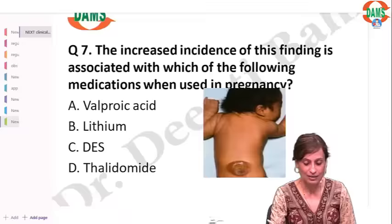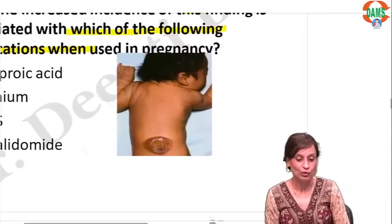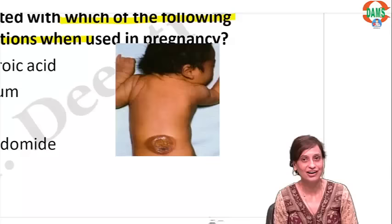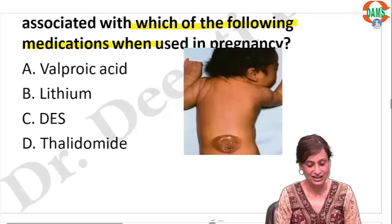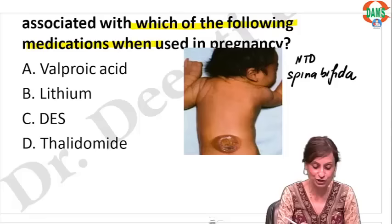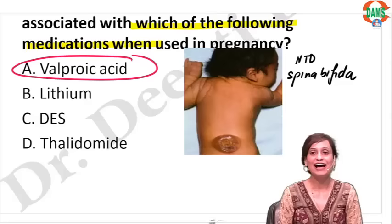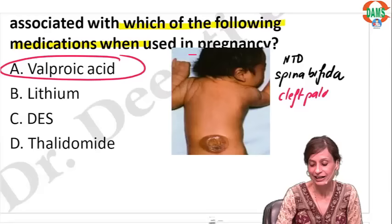The next question: the increased incidence of this finding is seen with which of the following medications when used in pregnancy? The finding is spina bifida — an open neural tube defect; we can even see the spinal cord contents. We are seeing a patient with spina bifida or a neural tube defect. The answer is valproic acid — sodium valproate classically causes neural tube defects as well as cleft palate, cleft lip, and cardiovascular anomalies.